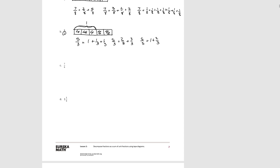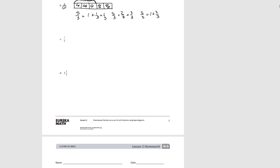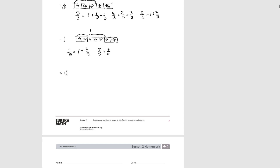For C, our tape diagram is divided into 7 equal size pieces, but we're talking about fifths — so 5 fifths is going to be 1, and we're talking about all 7 fifths. So 7 fifths could be shown as 1 plus 2 fifths, or 7 fifths could be 3 fifths plus 2 fifths plus 1 fifth, or 7 fifths equals 1 plus 1 fifth plus 1 fifth. That's 3 possible ways of doing it.